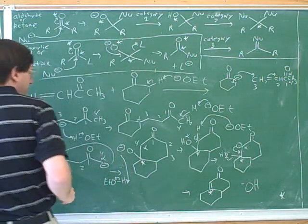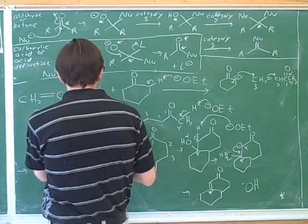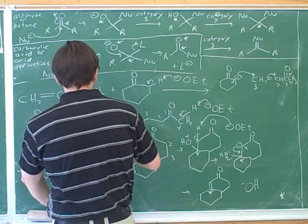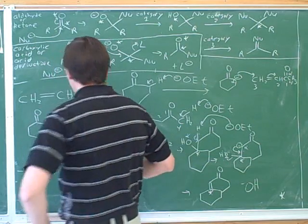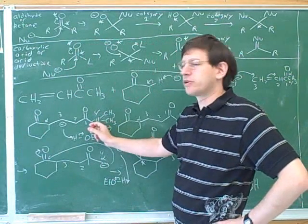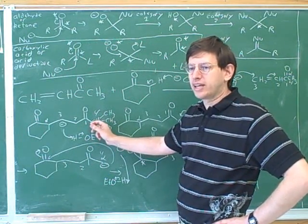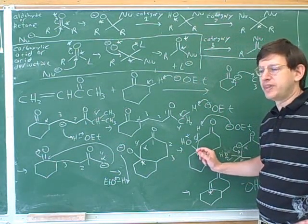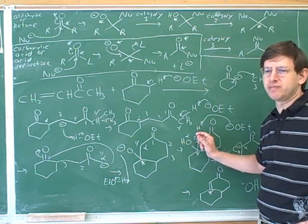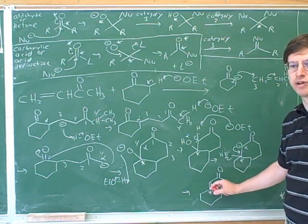So, for example, if this alpha carbon over here had been... If it had two methyl groups on it, it could only do a category 1 aldol condensation. It can deprotonate once and attack once to form something that looks like this. But then it wouldn't have any more protons left to deprotonate and do the second attack to form the double bond.